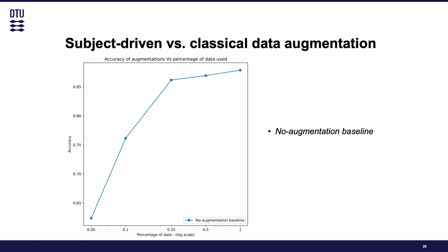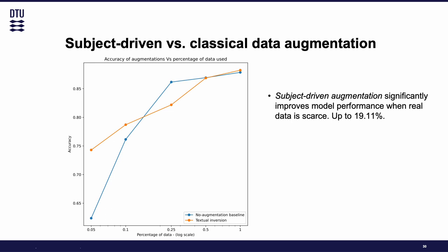One of the main experiments compares subject-driven techniques with classical data augmentation. We plot accuracy with regards to the percentage of the training set used. Comparing the no augmentation baseline with Textual Inversion, we can see that subject-driven augmentation significantly improves model performance when real data is scarce. With 5% and 10% of the training data, we get better accuracies with Textual Inversion augmentation. The results with the Stable Diffusion prompt are quite similar and also show improvements — in the case of Textual Inversion, we have an improvement of up to 19.11%.